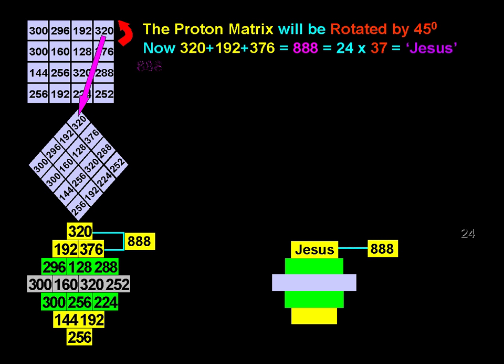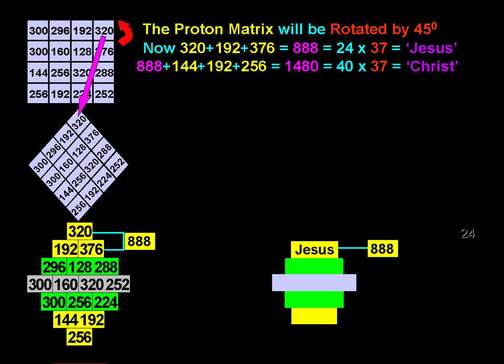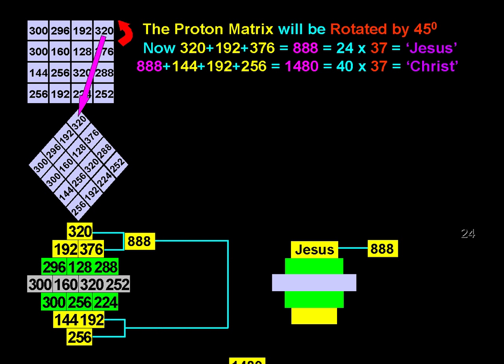888 plus 144 plus 192 plus 256 is 1480, which is 40 by 37, the value of Christ.